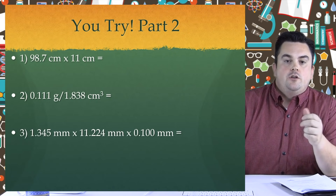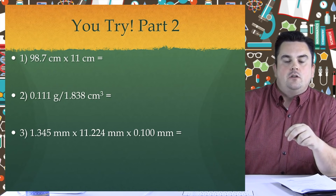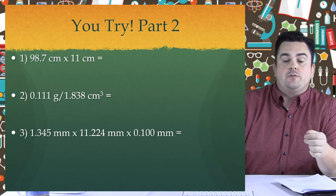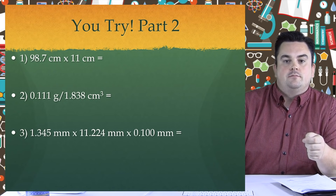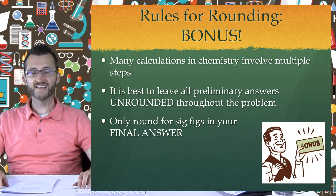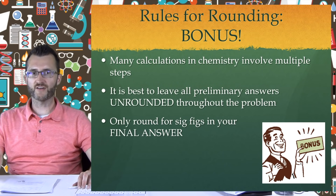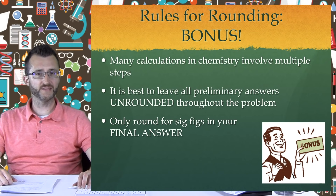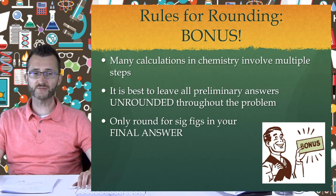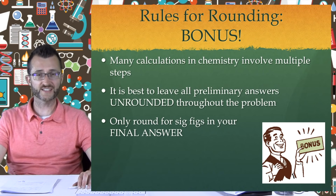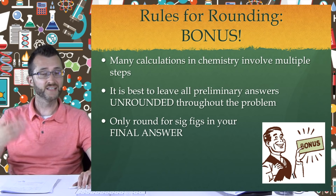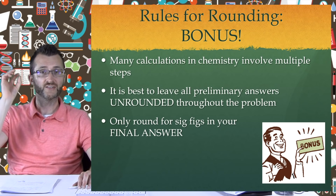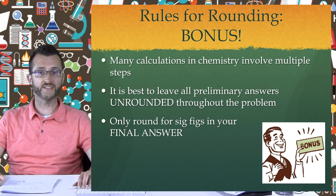You try part two: do these multiplication and division example problems, write down an unrounded answer with proper units first, then apply the new rules to get your final answer. Bonus rule: many calculations in chemistry involve multiple steps. It is best to leave all preliminary answers unrounded throughout the problem — only round for sig figs in your final answer. So if there's a whole series of calculations, you don't have to round for sig figs every time; just round at the very end.